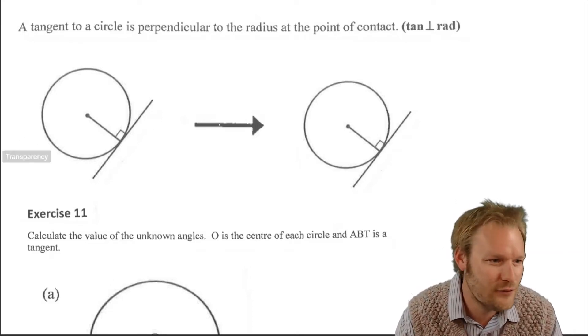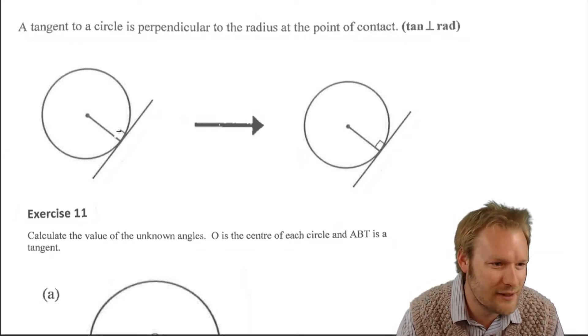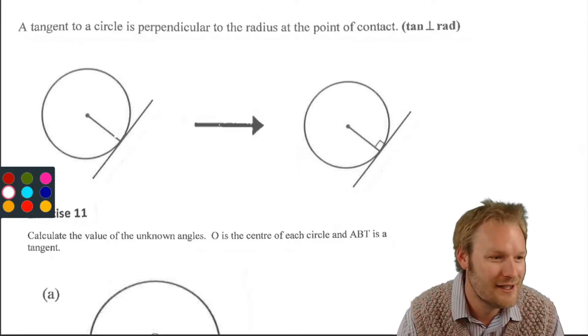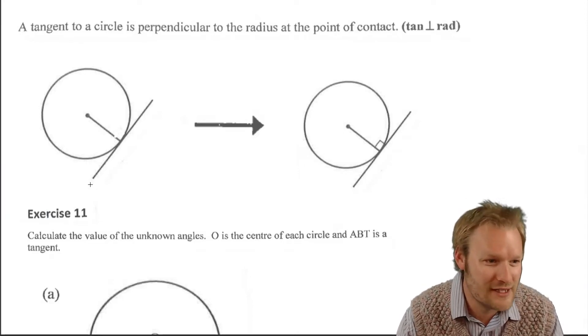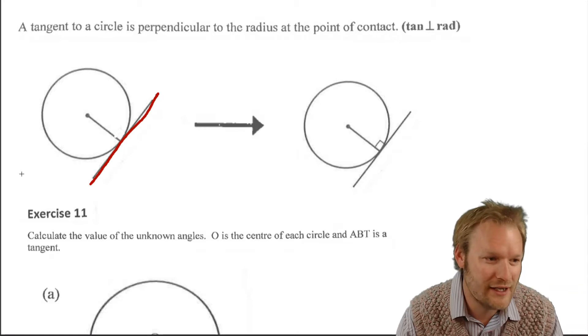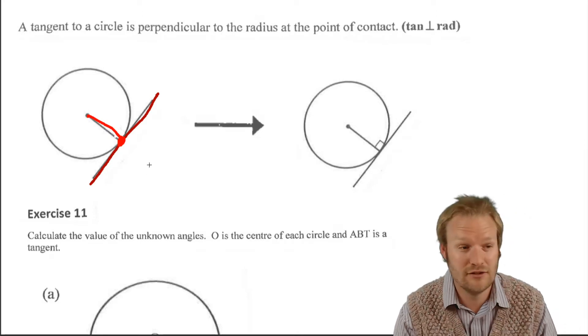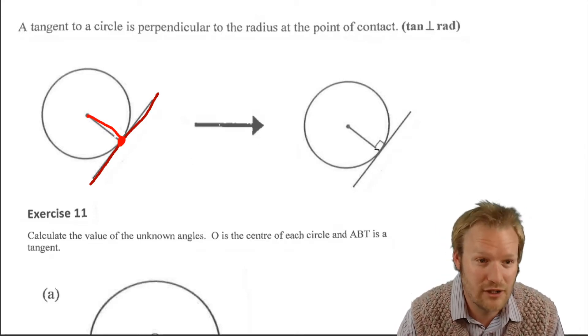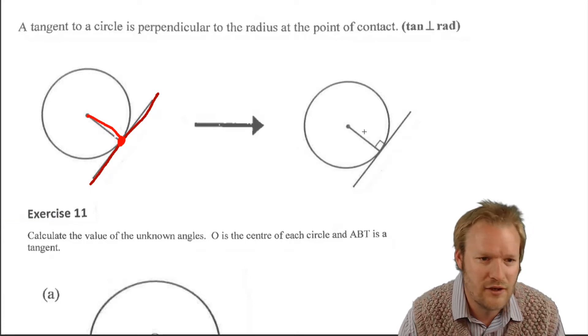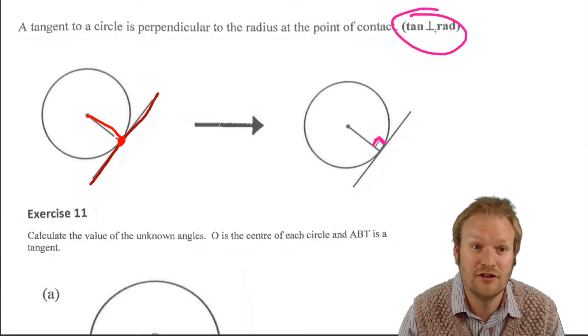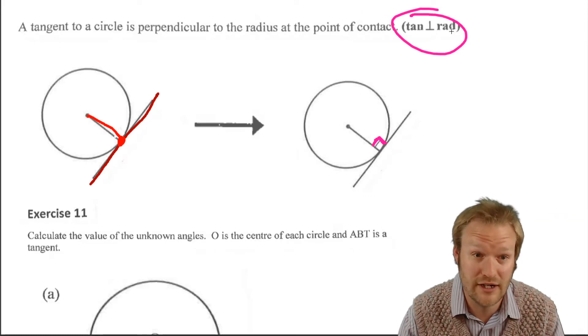First one, if we are given this diagram on the left, and we're not told that, then if we're given a tangent and there's a radius that touches the tangent at that point there on the circumference, then what we know is that this must be 90 degrees. And our reason's easy: tangent perpendicular to radius.